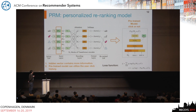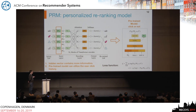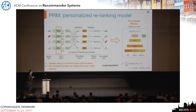Another important part of our model is the personalized vector. We use the hidden vector from a pre-trained model instead of manually designed features, because the hidden vector can contain more information, and the pre-trained model can utilize long-term user click history to better represent the user's preferences.